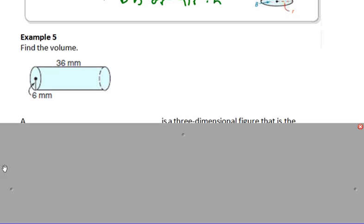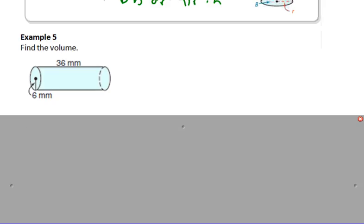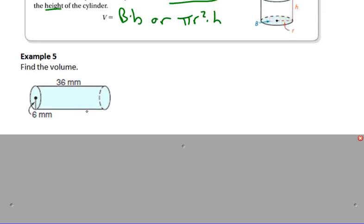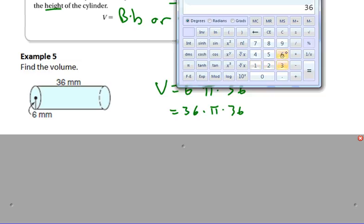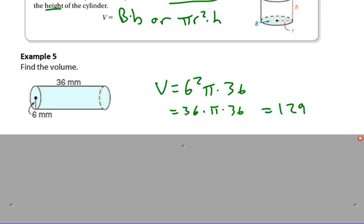So a couple of examples here. Find the volume. Area of the base here would be pi times radius squared, so 6 squared would be 36 times pi times the height of 36. So we have 36 times pi times 36. I'm going to use a calculator to figure out what 36 times 36 is. 36 times 36 equals 1296 pi millimeters cubed.